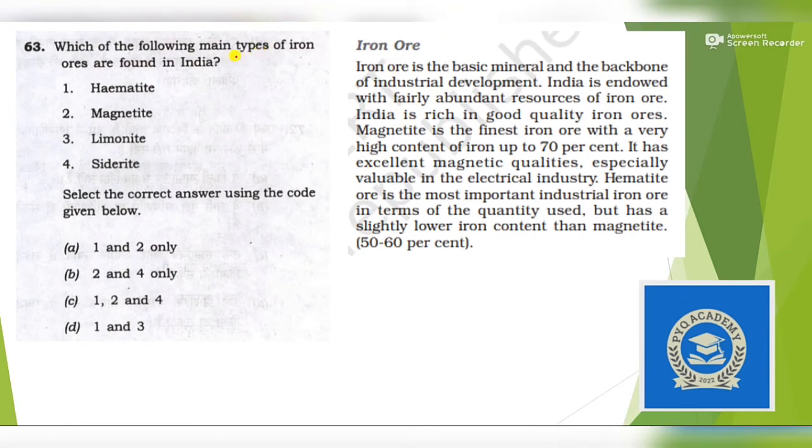Next question: Which one of the following main types of iron ore are found in India? Although all ores are found in India, hematite and magnetite are the main ores. You can see here I took this from the mineral chapter of NCERT. Magnetite is the finest ore with high content of iron up to 70%, then also hematite. If these two are given in NCERT, then our answer is only one and two.